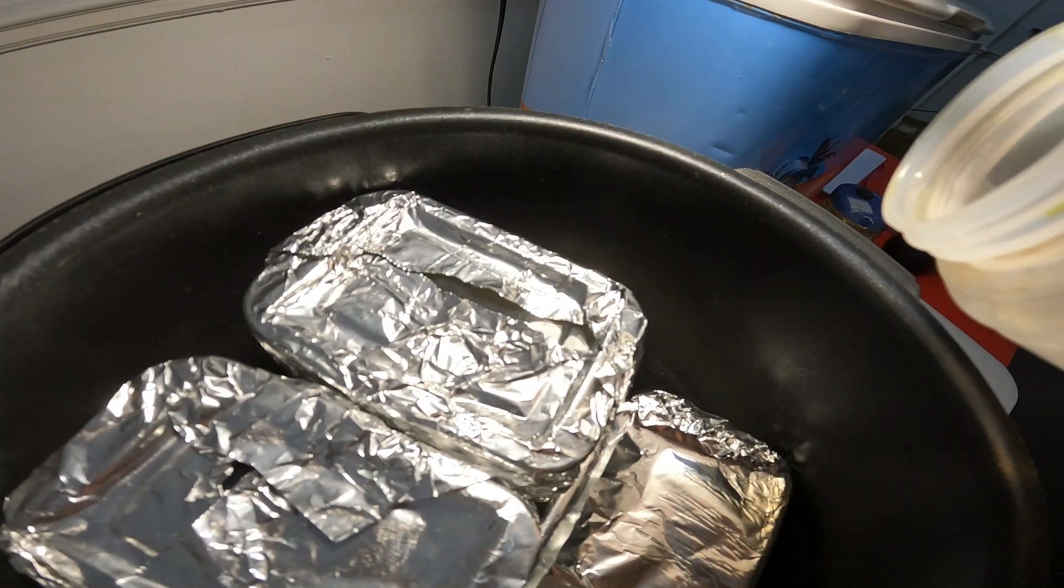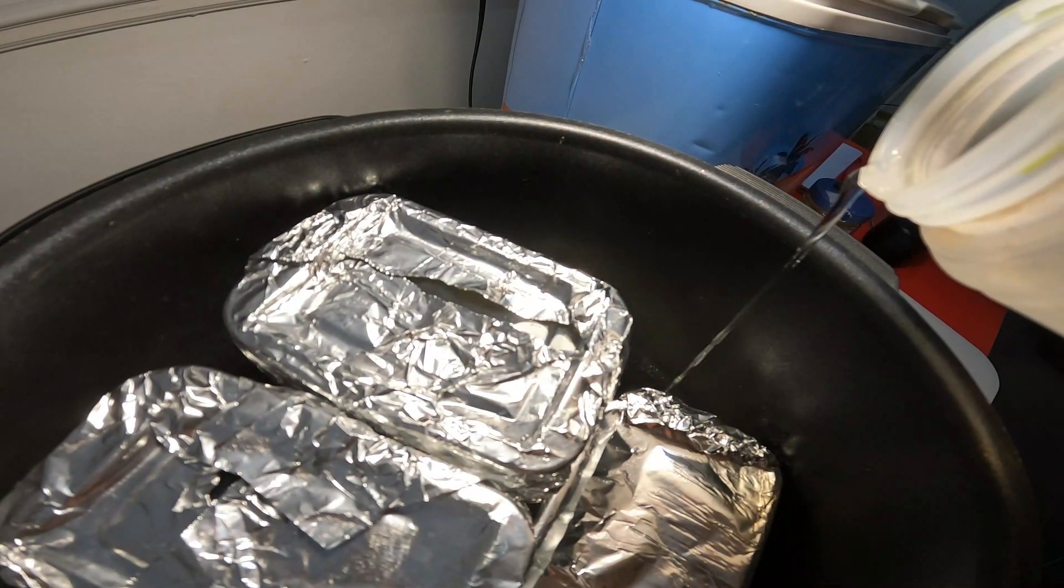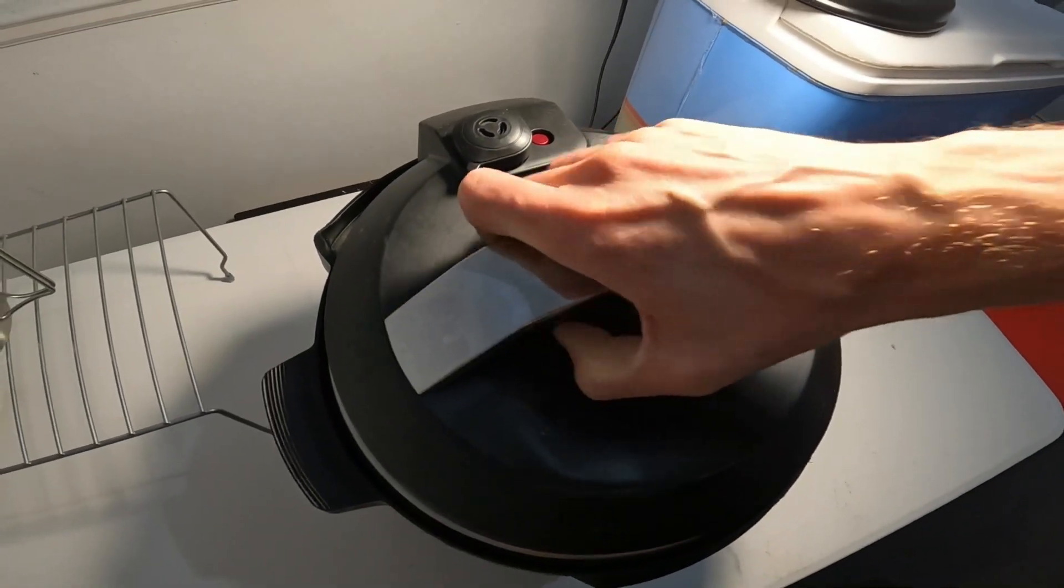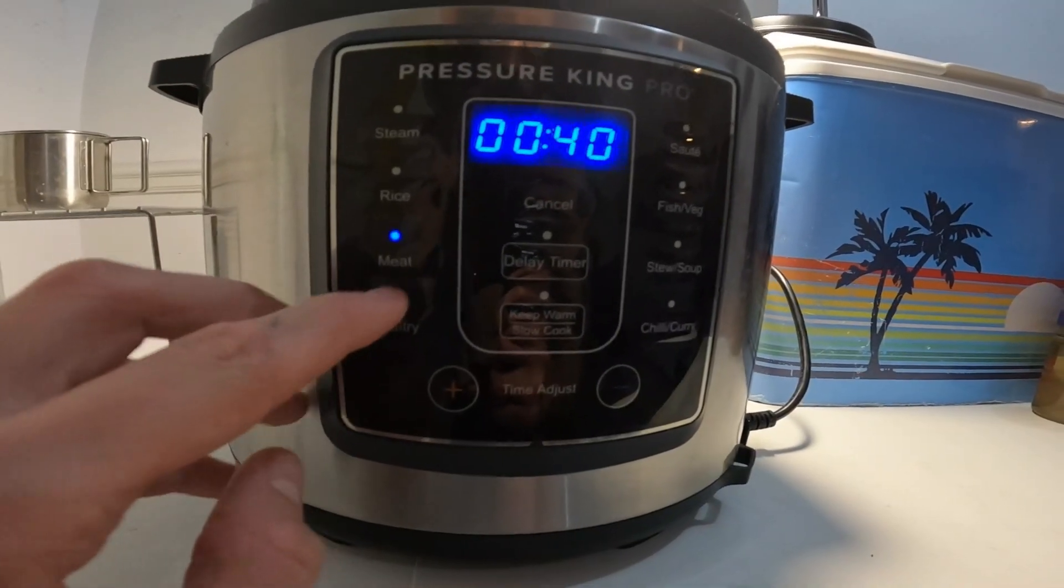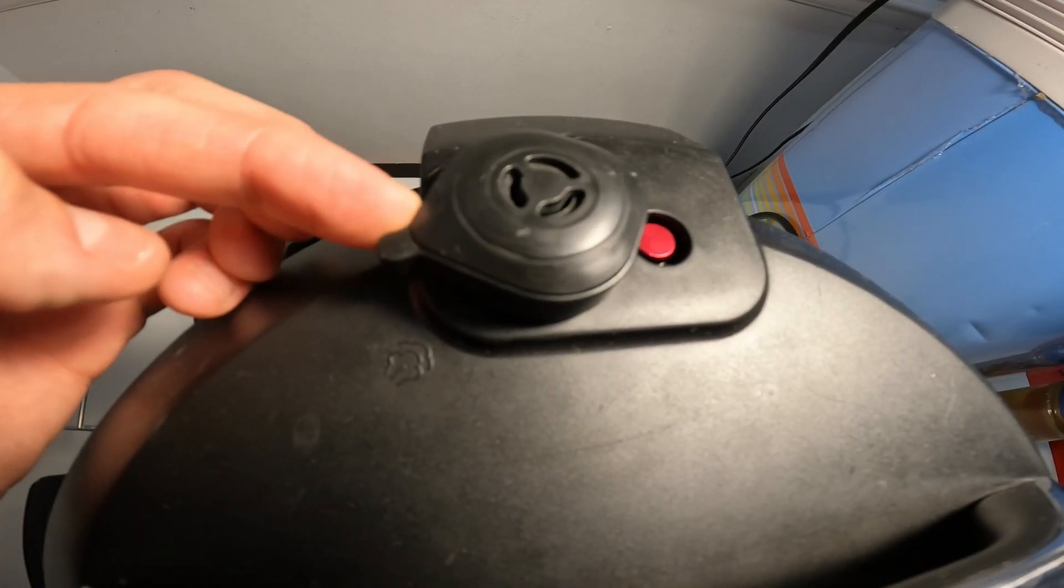Too lazy to walk to the sink, I just filled the pressure cooker with what was left in my water bottle. I secure the lid and I set it to meat for 40 minutes. I leave the valve open until it gets up to temperature.